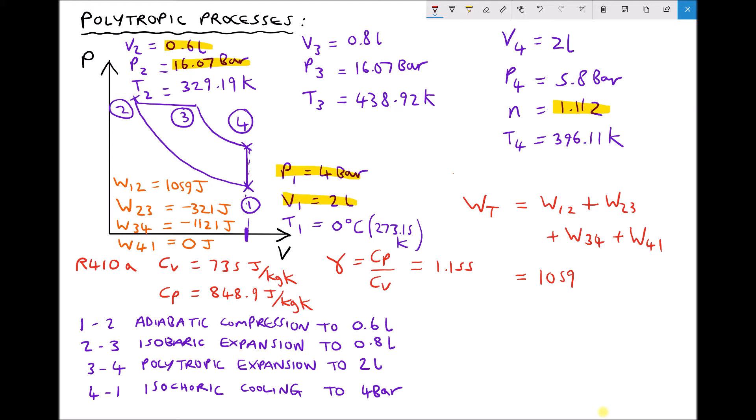We said the work done to move from position 1 to 2 was positive 1059. W23 was negative, if we add a negative that's the same as subtracting 321. We said the same for 3 to 4, that was also negative 1121. And 4 to 1 was 0. So we don't need to add 0 onto there. But that gives us a total work then equal to minus 383 joules.